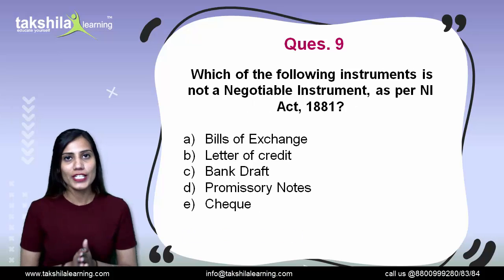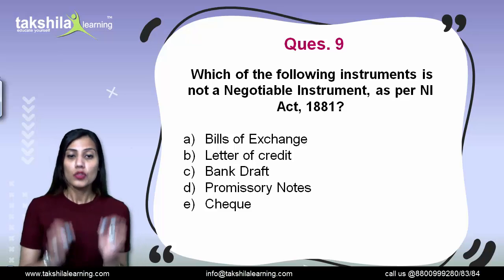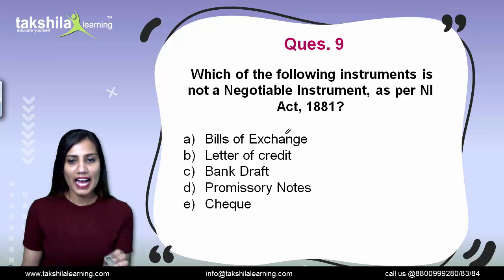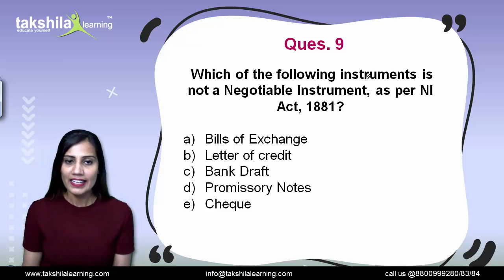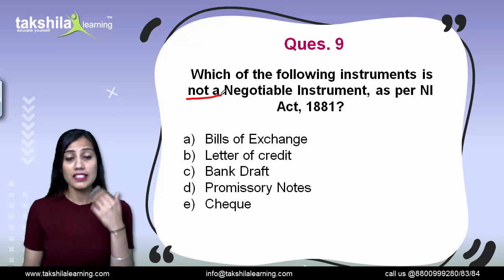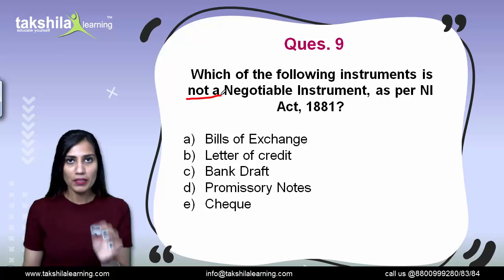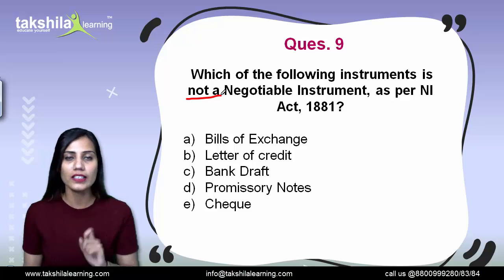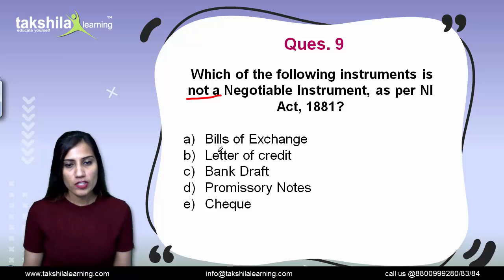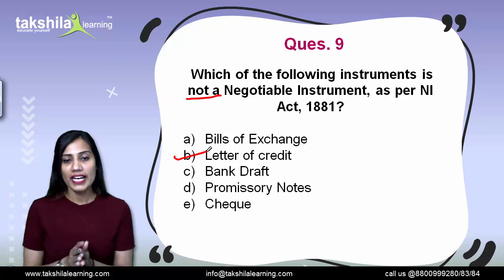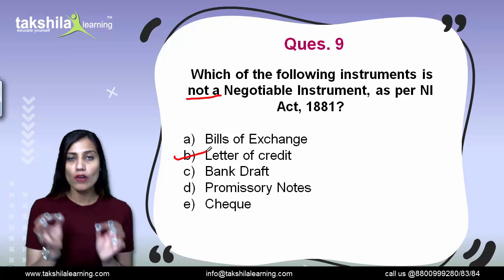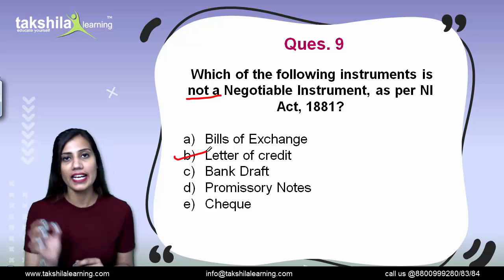Next question: which of the following instruments is NOT a negotiable instrument as per the Negotiable Instruments Act 1881? Always read 'not' carefully in exam questions. Options are bills of exchange, letter of credit, bank draft, promissory notes, or cheque. The correct answer is letter of credit — a letter of credit is given directly by buyers to sellers and is not a negotiable instrument as per the NI Act 1881.